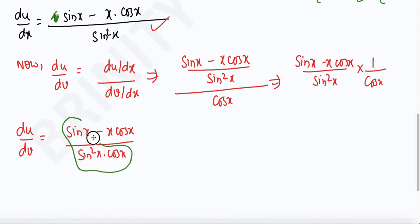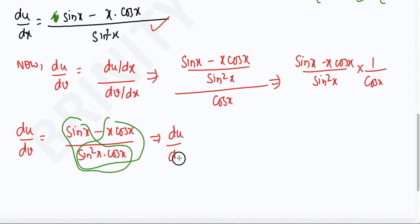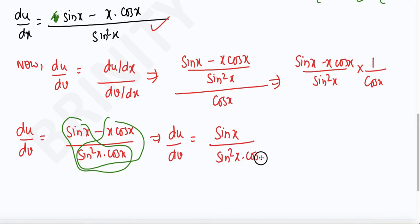So this will be sin(x)·cos(x) and then minus x·cos(x), divided by sin²(x), into cos(x).